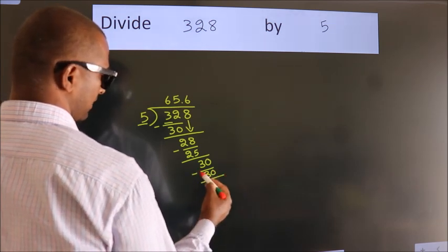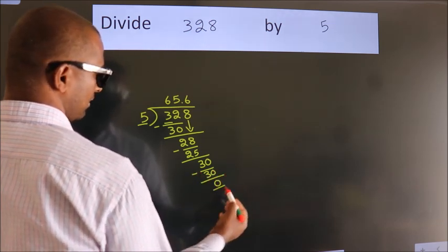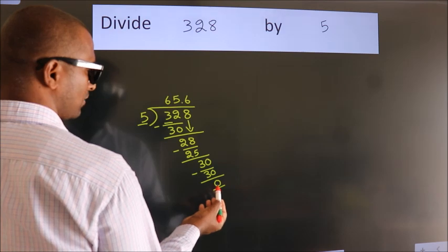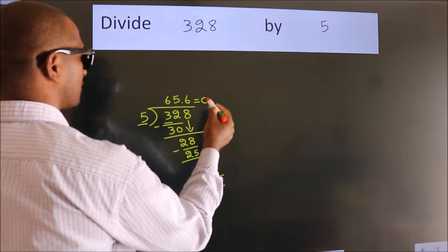Now we subtract. We get 0. We got remainder 0, so this is our quotient.